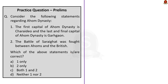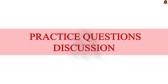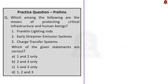Now we will move on to the practice questions section. For the prelims practice questions, we have five questions — four will be discussed and one will be the quiz question for the day. Question one: Which among the following are the means of protecting critical infrastructure and human beings? 1. Franklin lightning rod, 2. Early streamer emission system, 3. Charge transfer systems. Franklin rod is not the only way to protect against lightning. Early streamer emission systems closely resemble a lightning rod and work in much the same way, while the charge transfer system prevents lightning from forming within the area of protection. The correct answer is option D — all three: 1, 2, and 3.